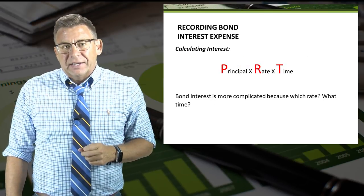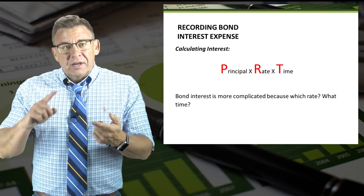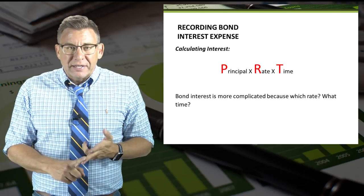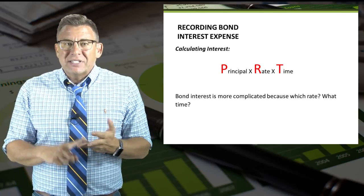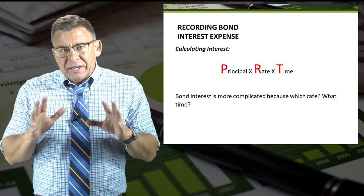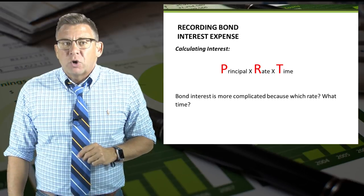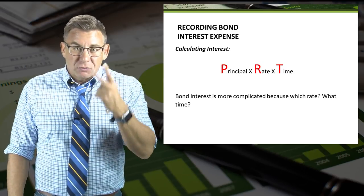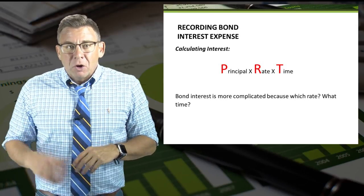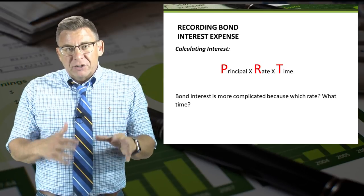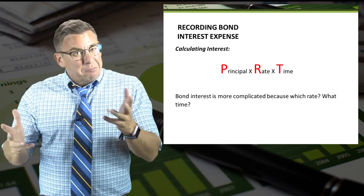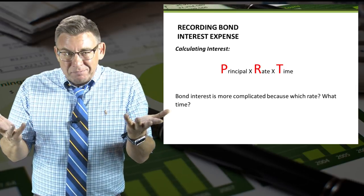Recall how to calculate interest — it is principal times rate times time. However, bond interest is more complicated because we have two rates. And most bonds pay interest semi-annually, so does that impact time?